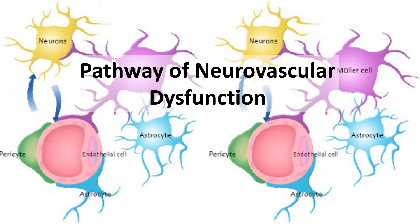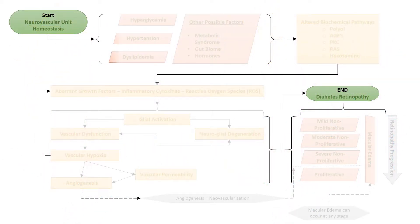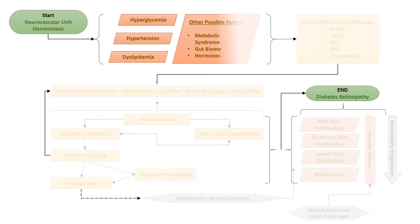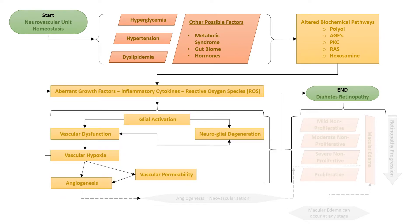What is the cascade of events that causes diabetes-related retinopathy? Chronic hyperglycemia and other factors cause detrimental alterations to a variety of cellular biochemical pathways active in the neurovascular unit. Collectively, these pathways and the inflammatory effects of chronic hyperglycemia are thought to cause an increase in aberrant growth factors, inflammatory cytokines, and/or reactive oxygen species. These changes cause a breakdown of glial, neural, or vascular elements, which begin the cascade of events leading to retinopathy.